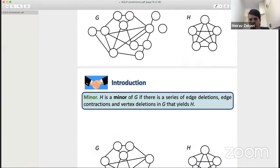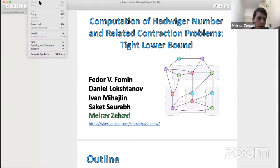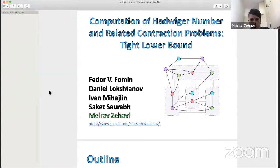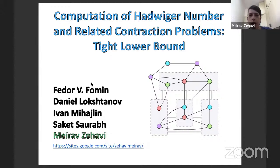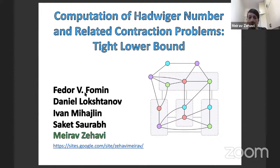Mayref apologizes for the delay due to a WiFi technical problem and shares their screen. Due to time constraints, only a few words will be said, with the full presentation available online. The paper considers the Hadwiger number problem and shows the approach is applicable to other contraction problems. The focus is on obtaining tight lower bounds under the ETH (Exponential Time Hypothesis).